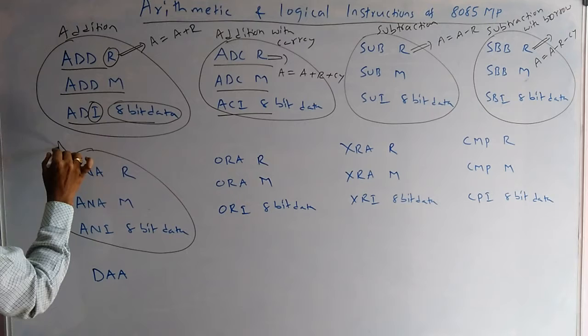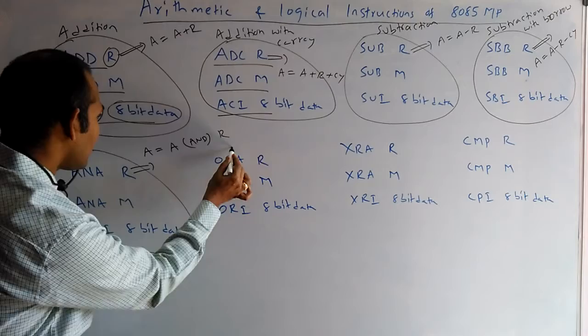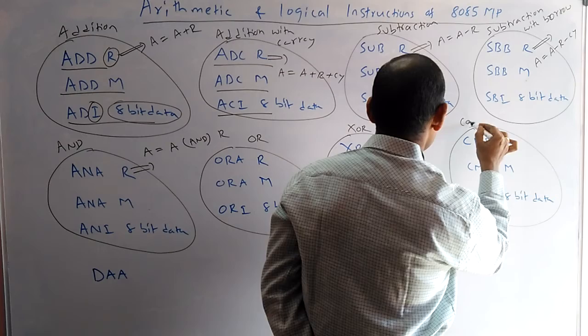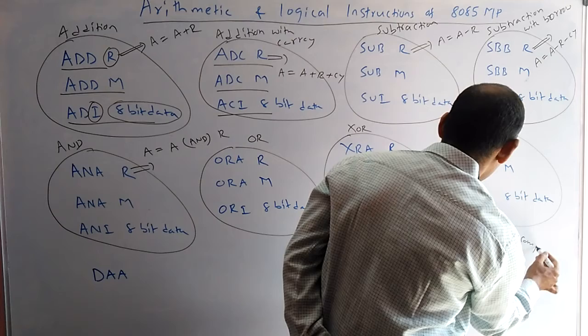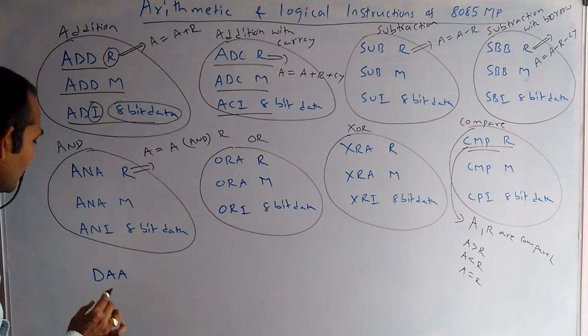There are three AND instructions, where one value is always in the accumulator, and A is ANDed with R. These are OR instructions, and these are XOR instructions. And these are compare instructions — A is compared with R. In the CMP R instruction, A and R are compared.